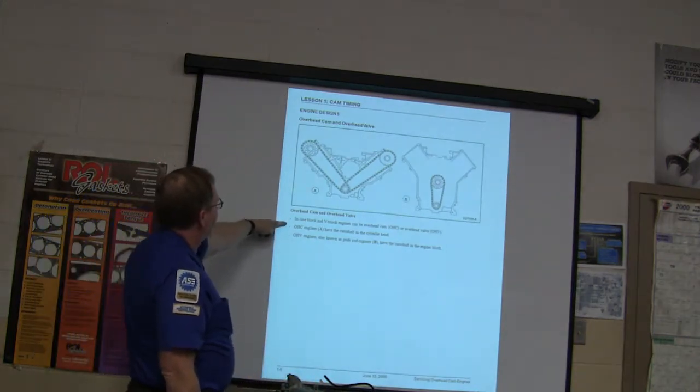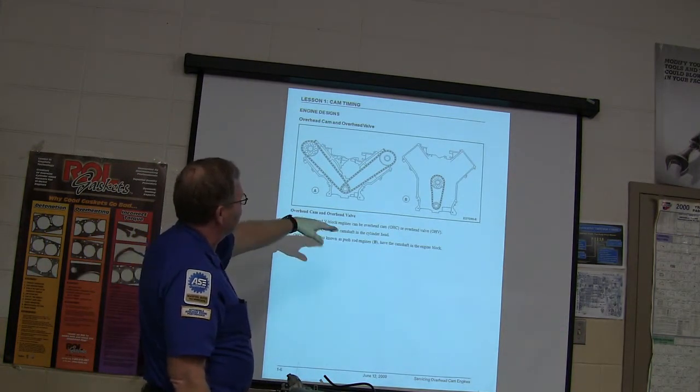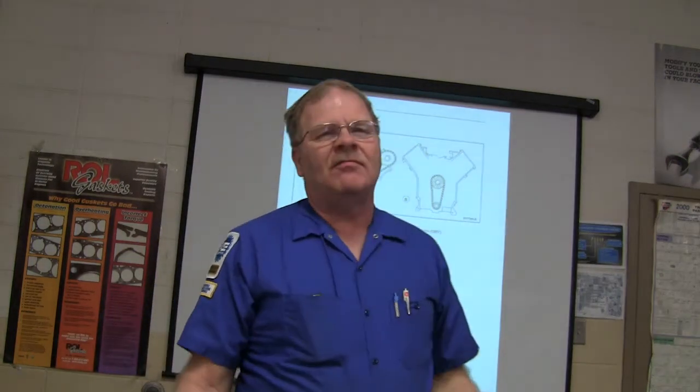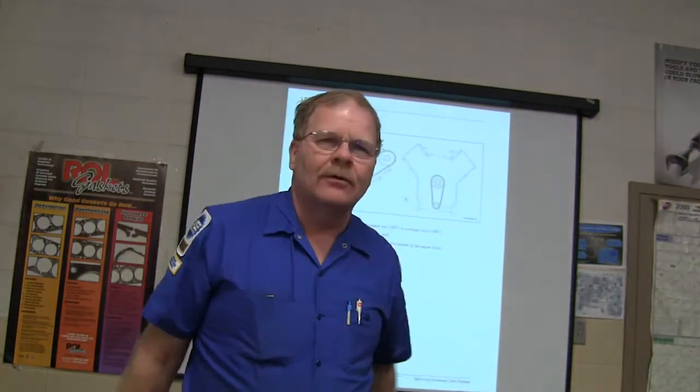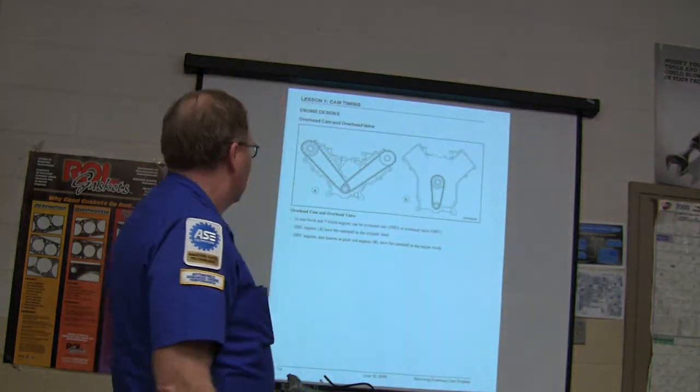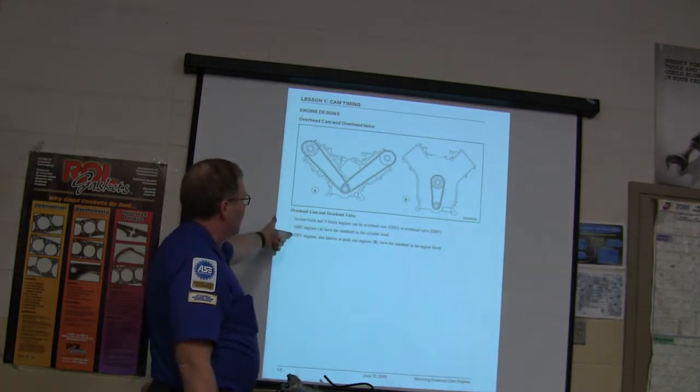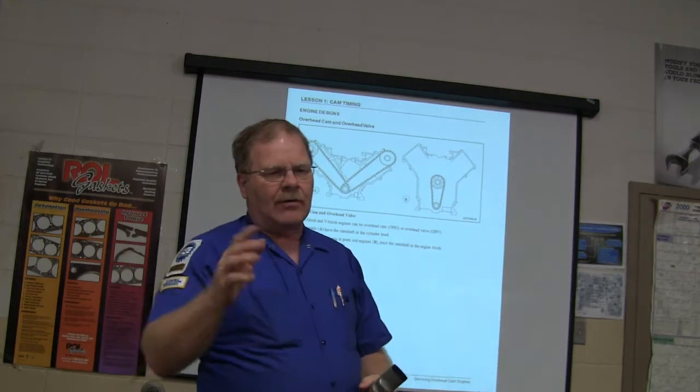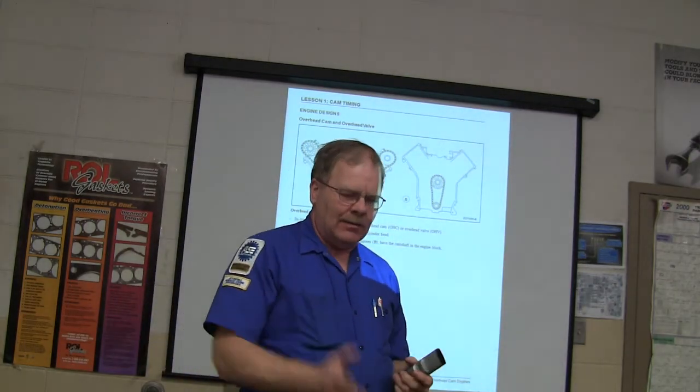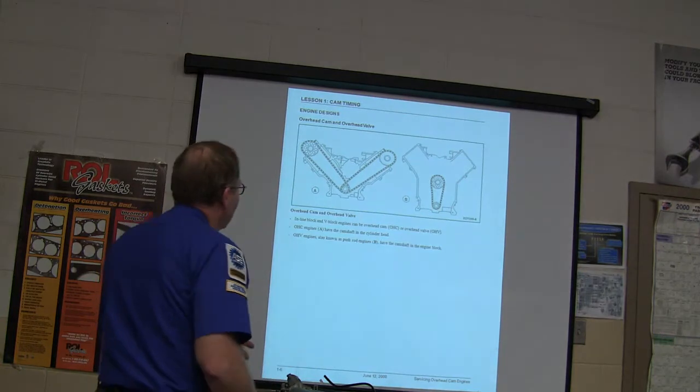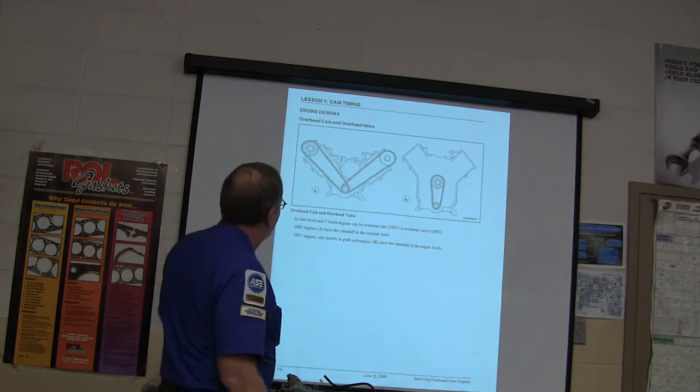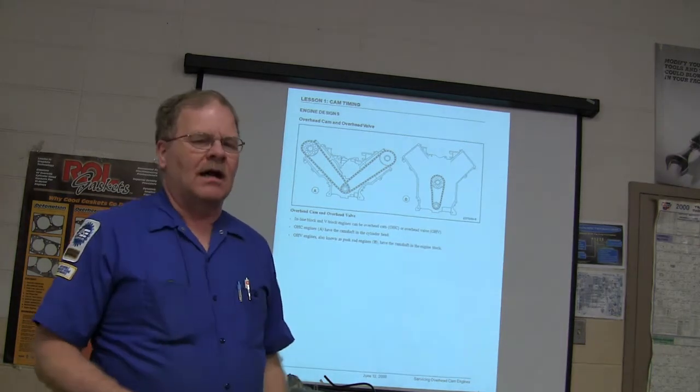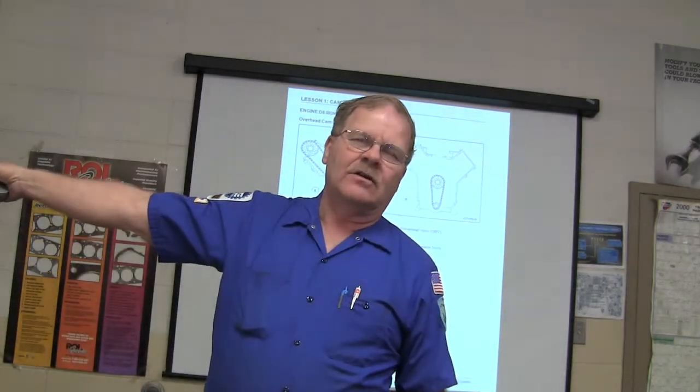Overhead cam and overhead valve. Inline block and V-block engines can be overhead cam or overhead valve. I don't know why they call them overhead valves, because all the valves are overhead unless it's a flathead. But anyway, when they say OHV, that basically means you've got valve cover, you've got push rods, you've got rocker arms, and the camshaft's in the block. If it's overhead cam, it's like this right here. Overhead valve engines are also known as push rod engines because they've got push rods in them and the camshaft's in the block.